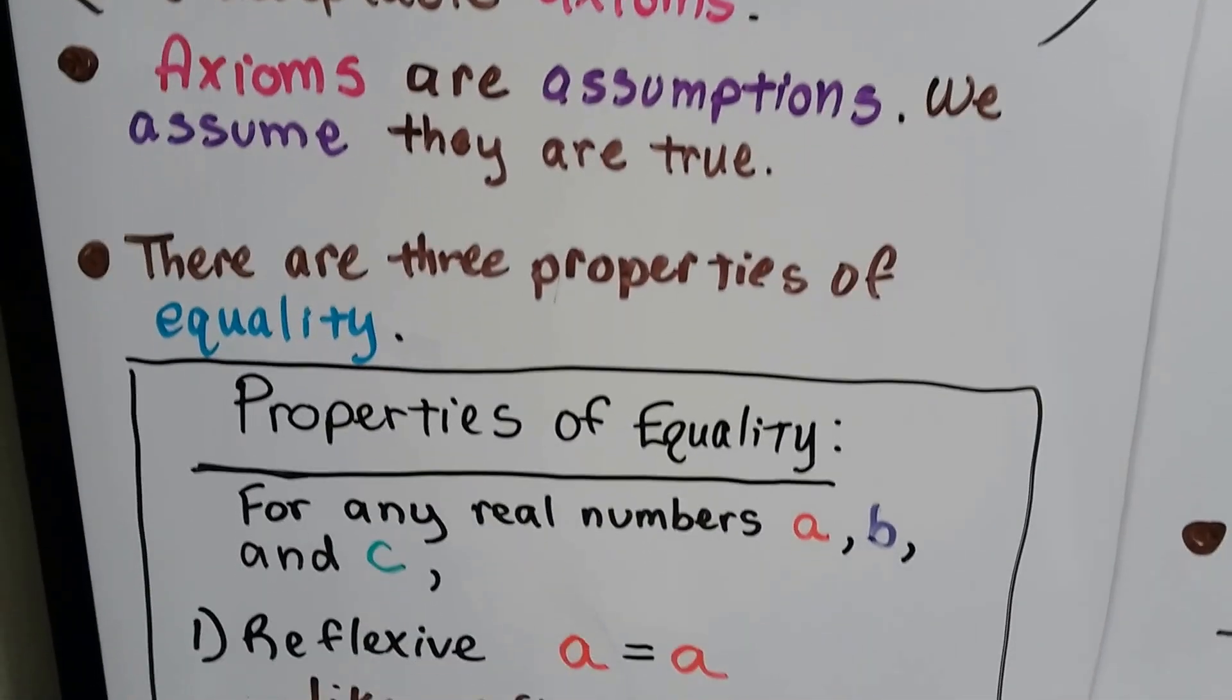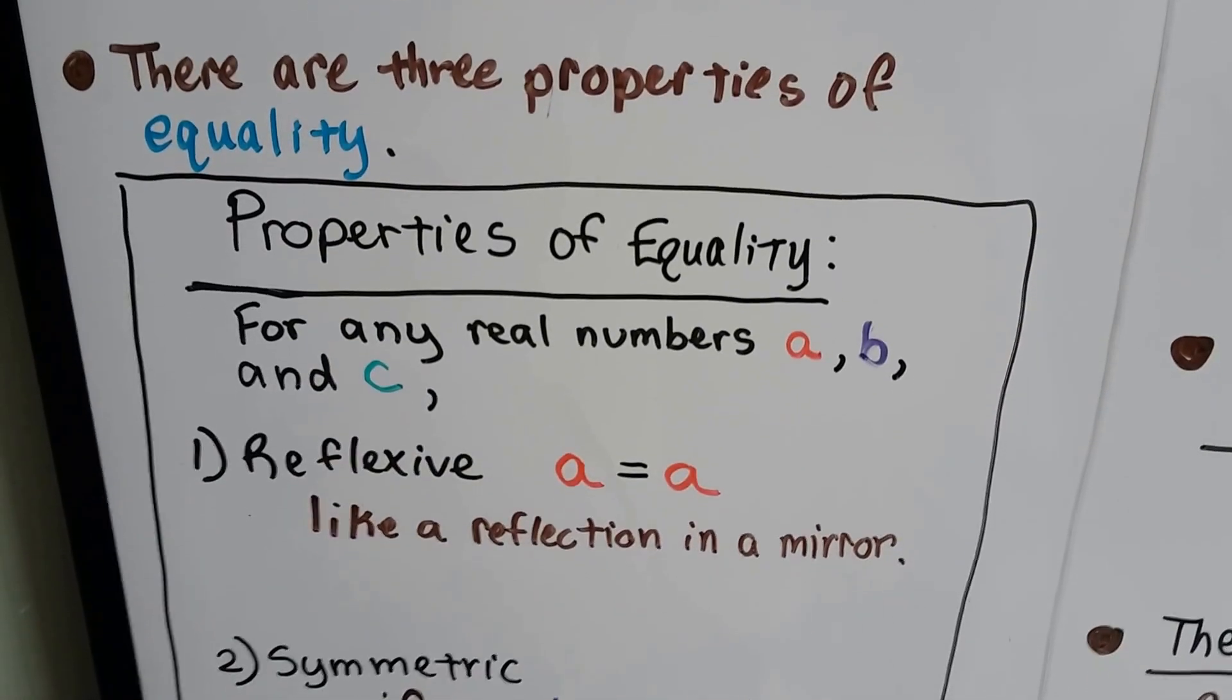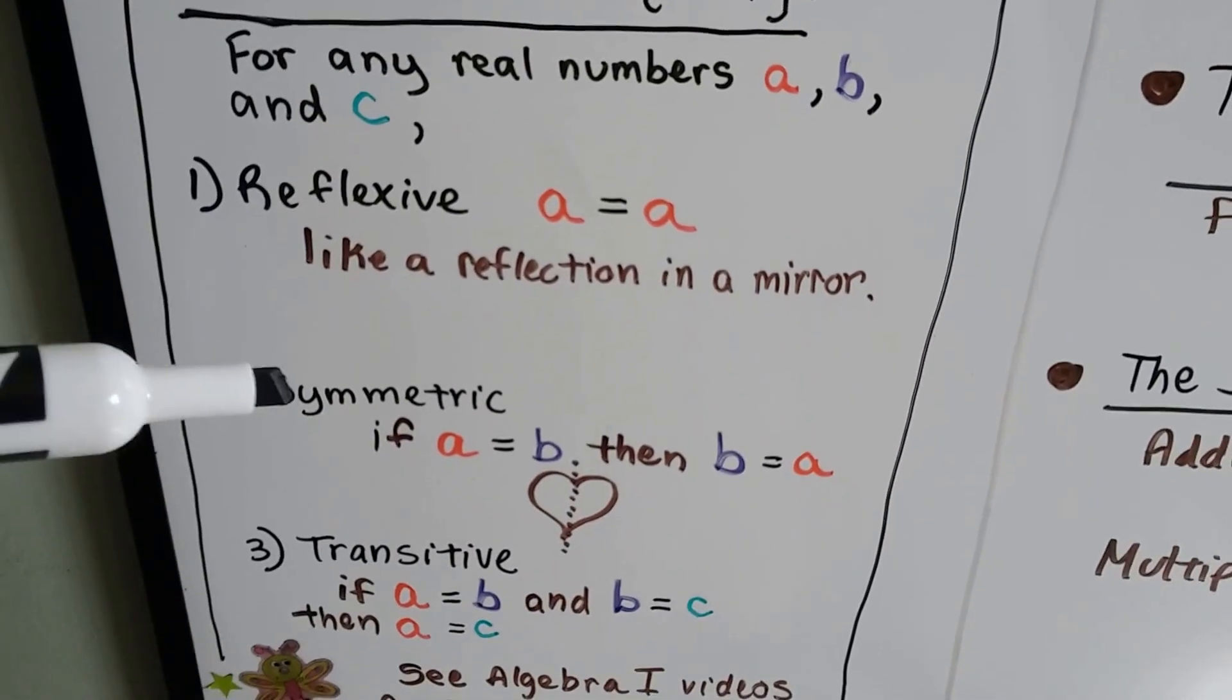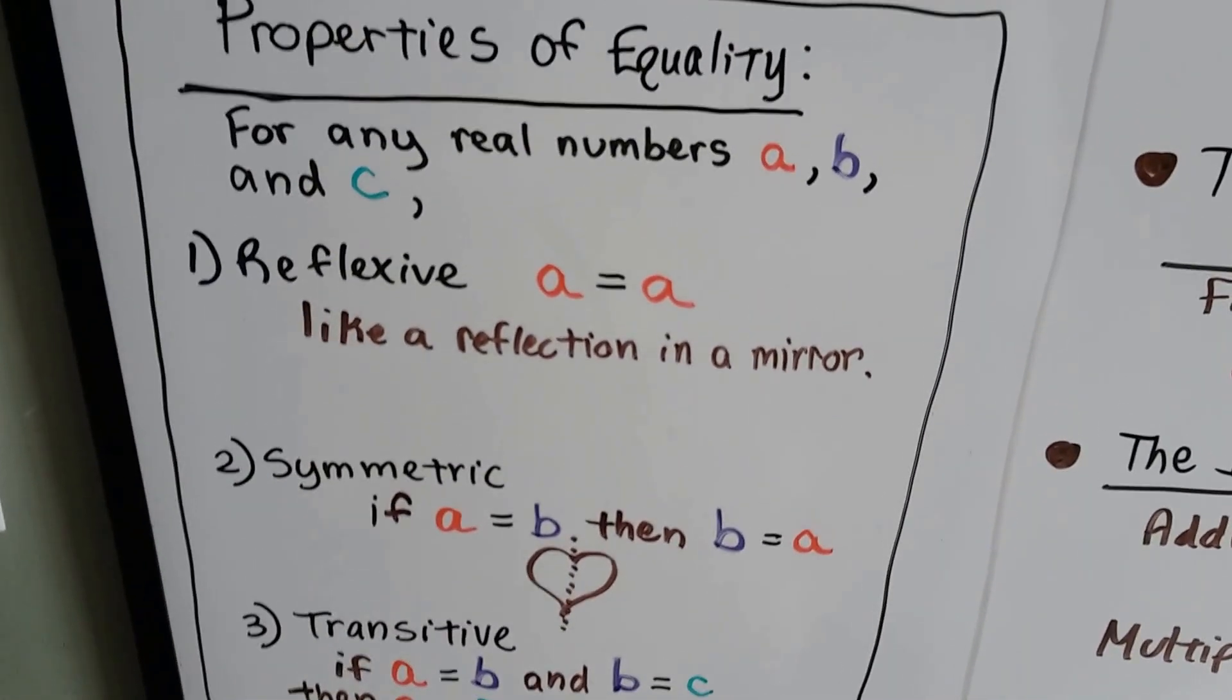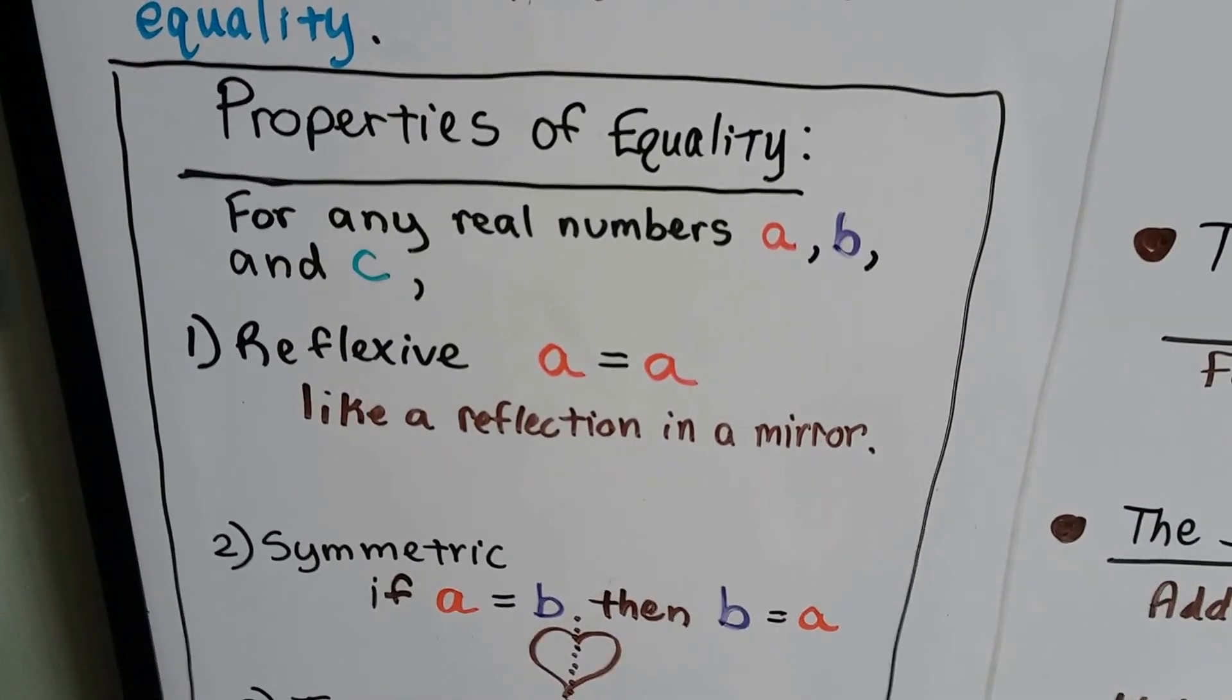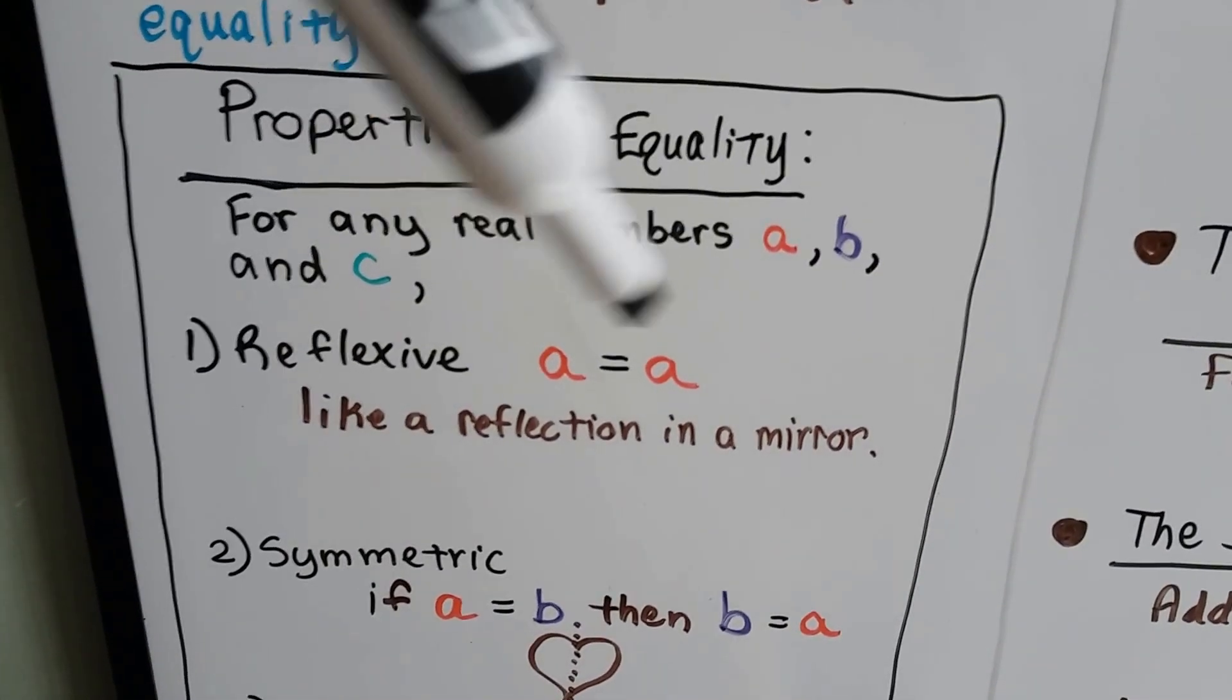Now, there are three properties of equality. So for any real numbers A, B, and C, we have the reflexive, symmetric, and transitive properties. Reflexive is like a mirror, like a reflection in a mirror. A equals A. It's just reflecting itself.